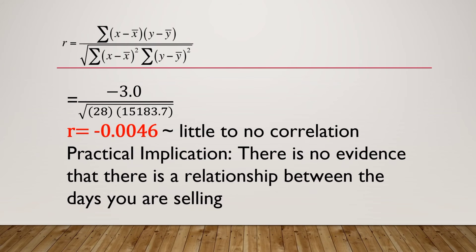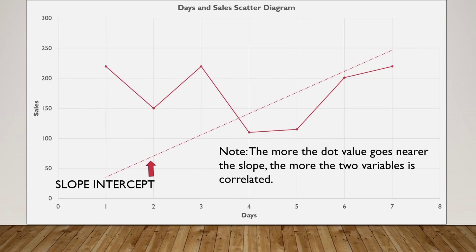The practical implication: going back to the data, there is no evidence of a relationship between the day number and the sales. That's how you do the computation for the correlation and the interpretation — you just refer to the rule-of-thumb table to see the meaning of the r value.